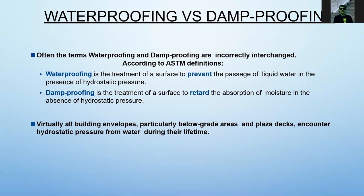In the presence of hydrostatic pressure, there is a continuous presence of water with pressure acting upon the wall, floor, or foundation of the structure. In dampproofing, there is an absence of hydrostatic pressure, but there is presence of moisture that is absorbed by the wall, floor, ceiling, and any parts of the concrete structure.